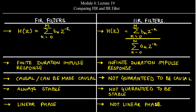The FIR filter has a transfer function H equal to summation K running from 0 to M of BK times Z to the power minus K, whereas the IIR filter transfer function is given as H equal to summation K from 0 to M of BK Z to the power minus K, divided by summation K from 0 to N of AK Z to the power minus K.